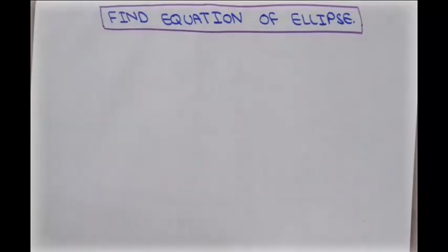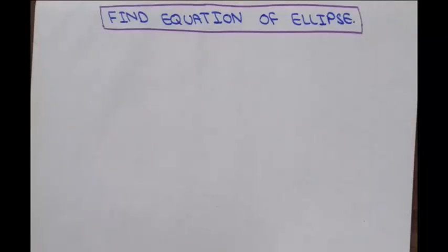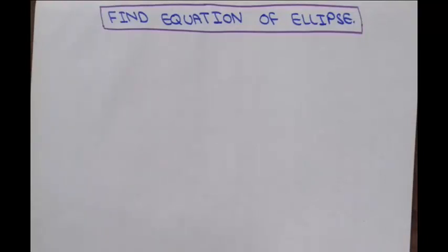In today's lecture, we will learn how to find the equation of the ellipse when we are given with center, focus, and vertex point. For understanding the concept, we will take two interesting examples. In our first example, we will learn how to find the equation of the ellipse when the center is at origin, and in our second example, when the center is not at origin. We also discuss how to plot it on a graph.